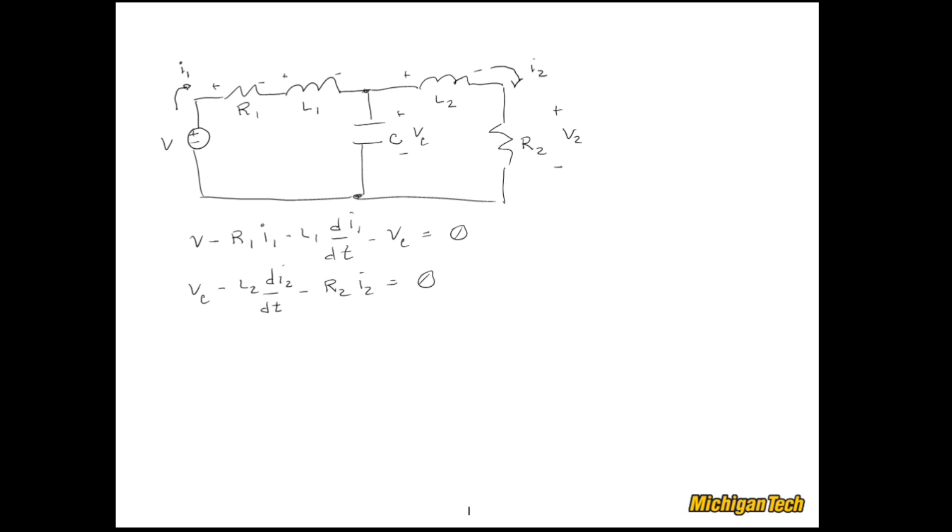And what else do we have? We can also look at this point right here and sum all the currents into it, so into it and out of it. So if I denote that as Ic, then what I have is I1 going into the node, minus I2 leaving the node, minus Ic leaving the node, is also equal to zero. Now Ic is the current through that capacitor, and we know that that's equal to C*dVc/dt. So I can rewrite this equation as I1 minus I2 minus C*dVc/dt, and that's equal to zero.